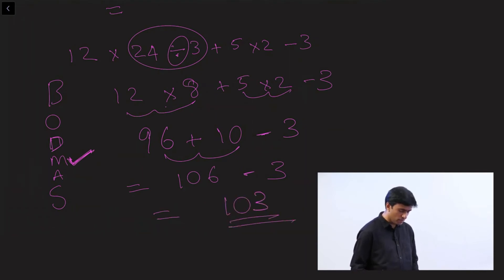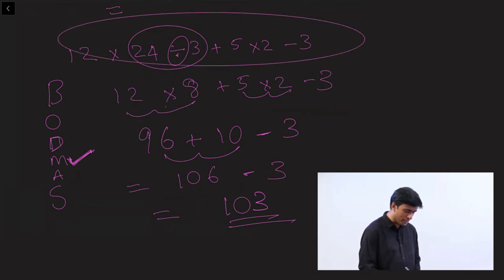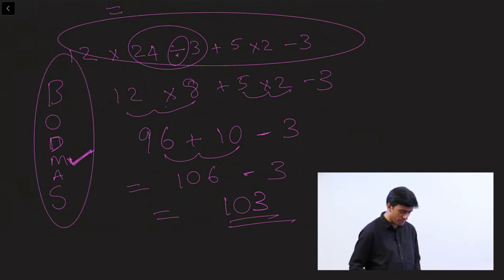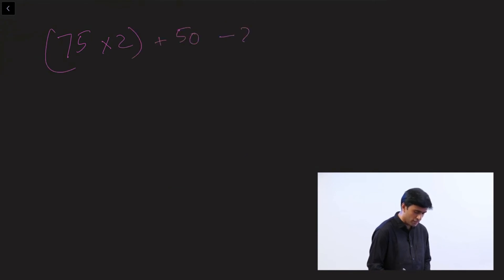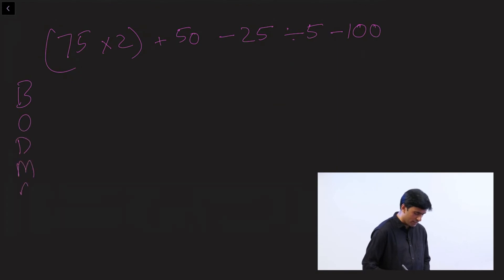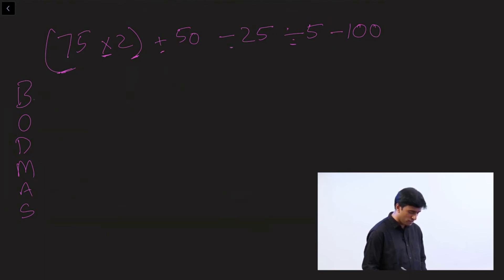This is how you solve a complicated mathematical expression using the BODMAS rule. Let's look at another example: 75 × (2 + 50) − 25 ÷ 5 − 100. You have brackets, multiplication, addition, division, and subtraction. According to BODMAS, solve the brackets first: 2 + 50 = ... wait — 75 × 2 inside brackets gives 150. So: 150 + 50 − 25 ÷ 5 − 100.